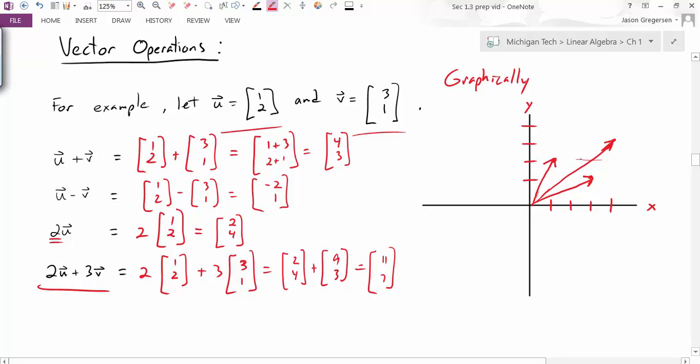Now the other visual representation, if I connect all these tips together, I create a parallelogram. And the sum of the two vectors is exactly the diagonal of that parallelogram. So this is the way we can graphically represent vector addition in the two-dimensional coordinate system.